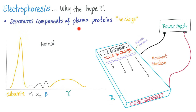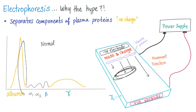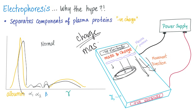Electrophoresis separates the components of plasma proteins using an electric source. Because plasma proteins are negatively charged, they escape from the negative electrode and travel toward the positive electrode. We then plot a graph based on where they end up — for example, albumin accumulates in one region, while other proteins distribute elsewhere. The direction and speed of movement depend on both the charge and the mass of the proteins.